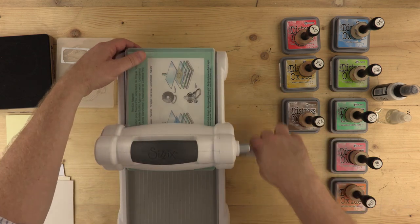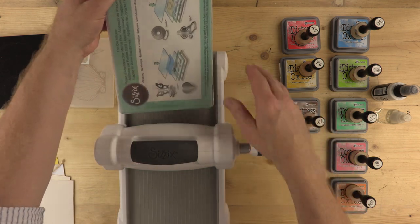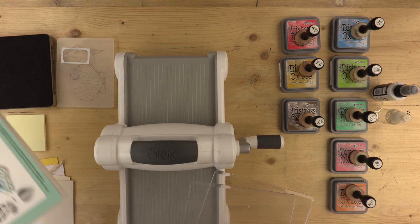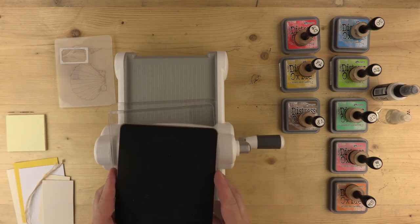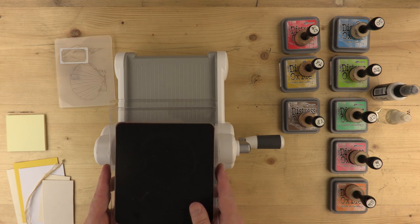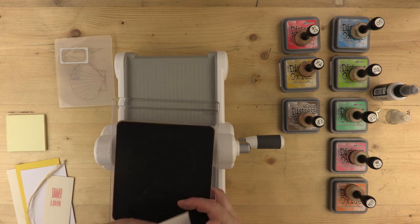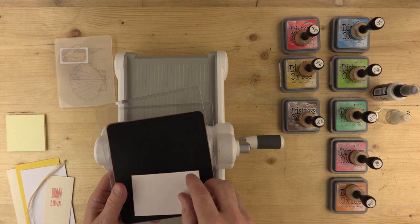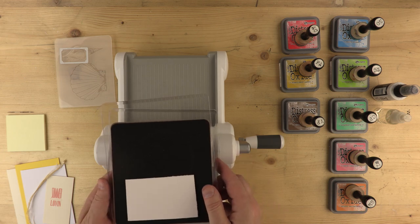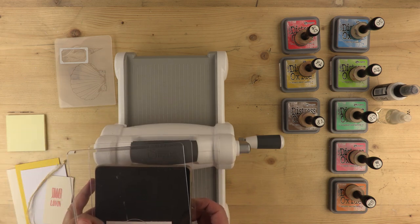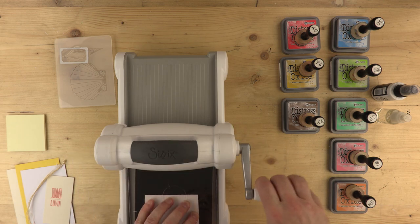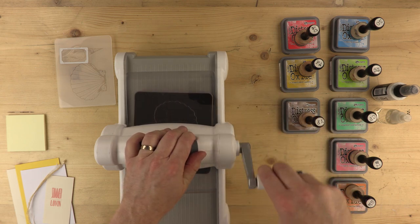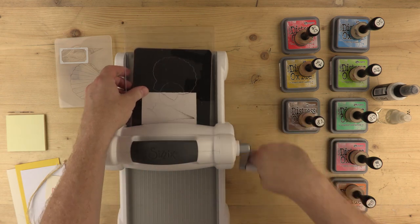So I'm going to start by cutting one of the two gorgeous seashells on this Biggs die. This die incidentally comes with its own embossing folder which correspond obviously with the die cut shapes. So today I'm cutting mountboard. Mountboard is a very heavy material. Don't try cutting it with wafer thin dies. You will need Biggs dies to cut this thickness of material.